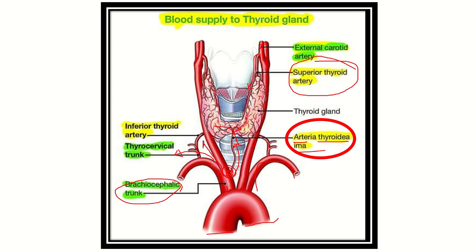After arising, the superior thyroid artery descends into the thyroid gland and supplies the upper part on both sides. The inferior thyroid artery arises from the thyrocervical trunk, which comes from the subclavian artery — right subclavian on the right side and left subclavian on the left side. The thyrocervical trunk ascends and supplies the inferior part of the thyroid gland. Importantly, the parathyroid glands, which lie in the posterior part of the thyroid gland, are also supplied by the inferior thyroid artery.